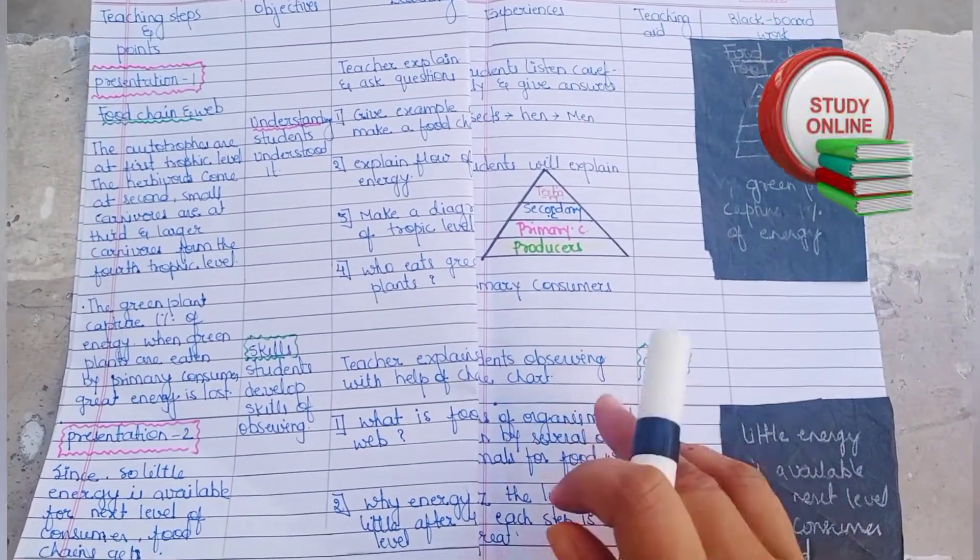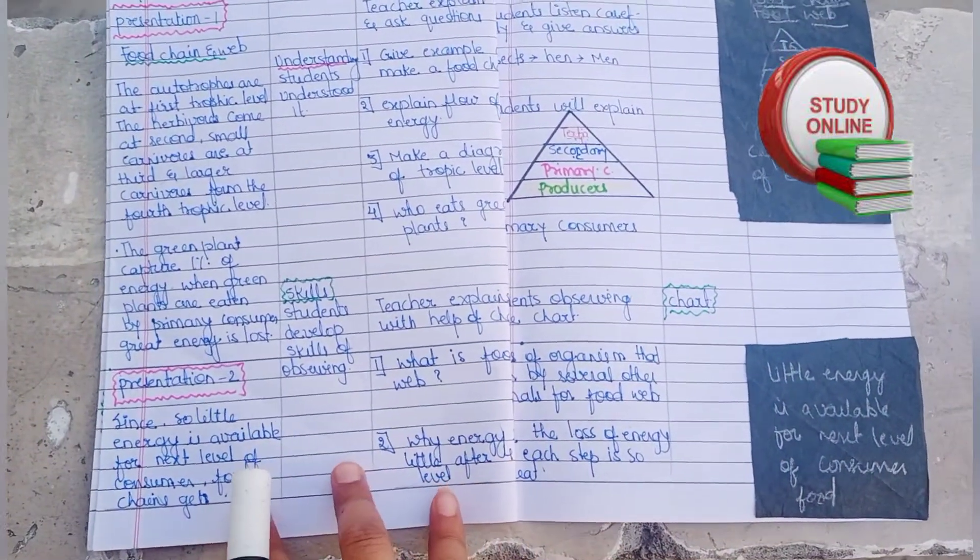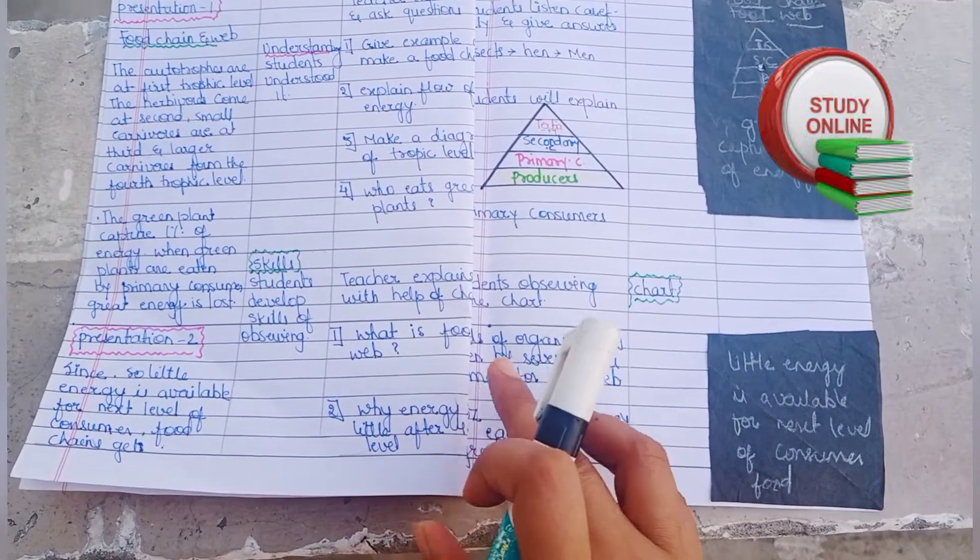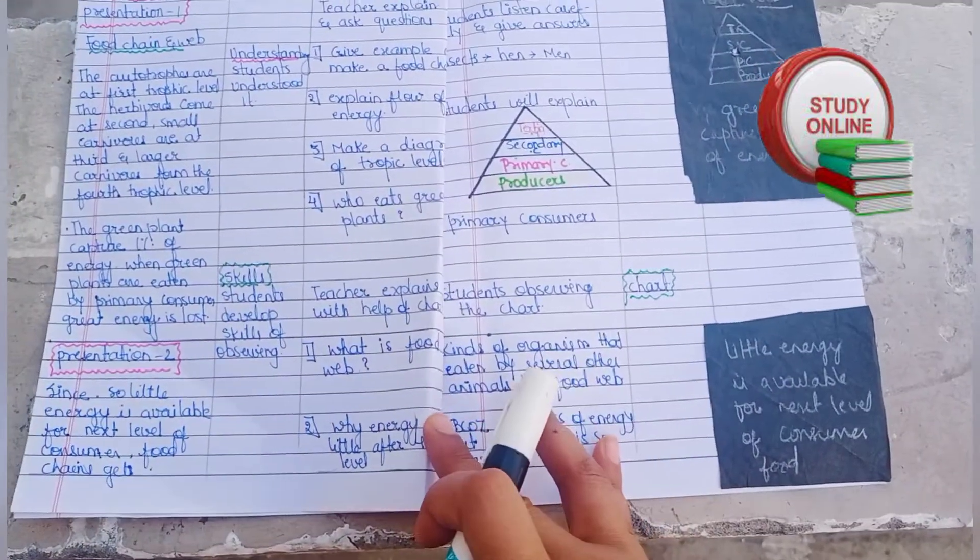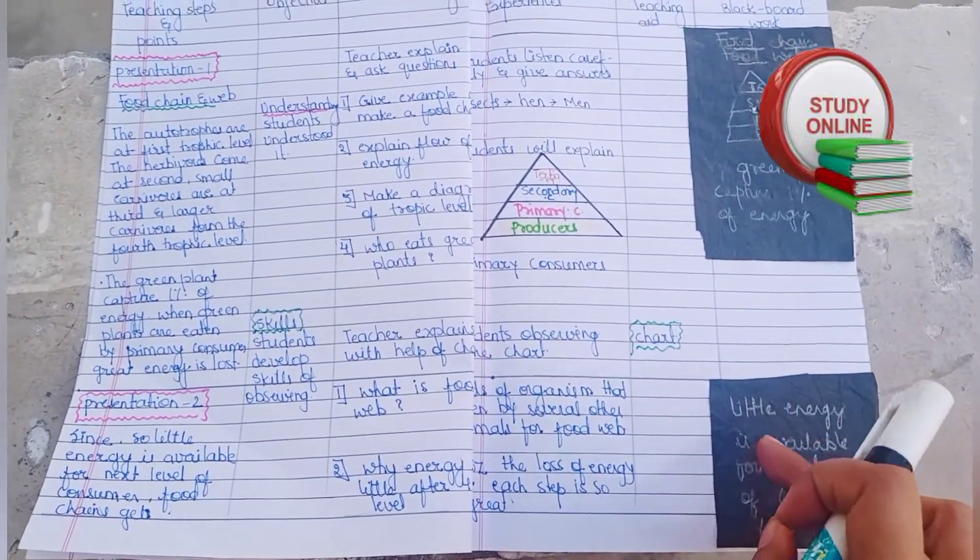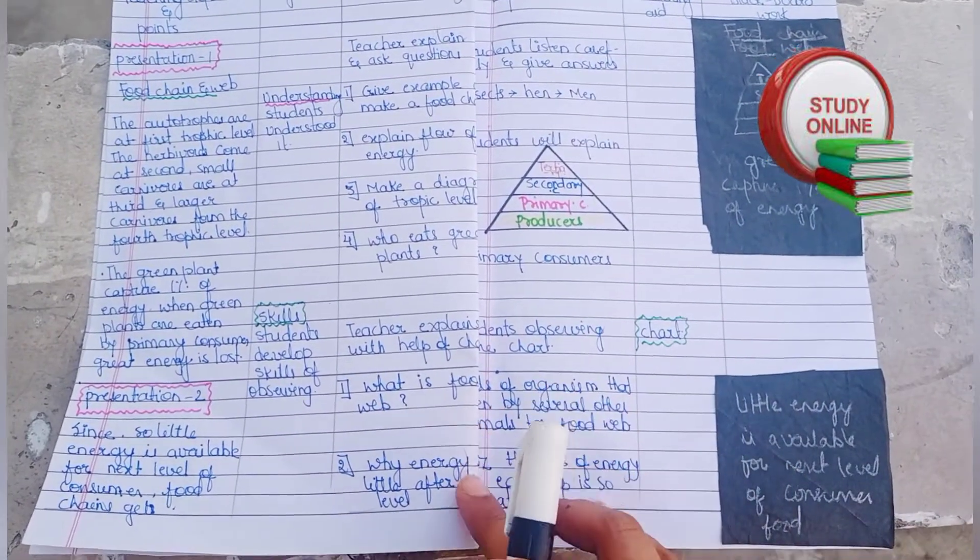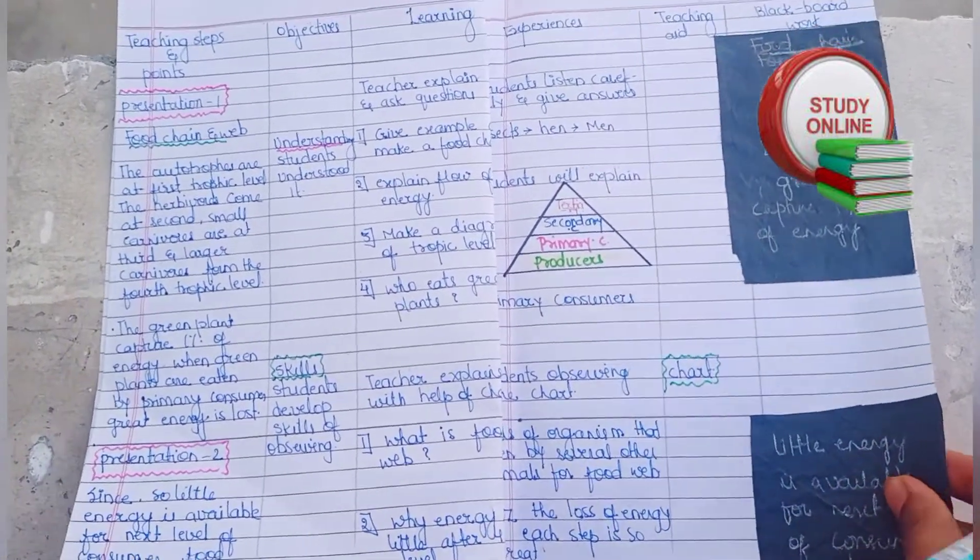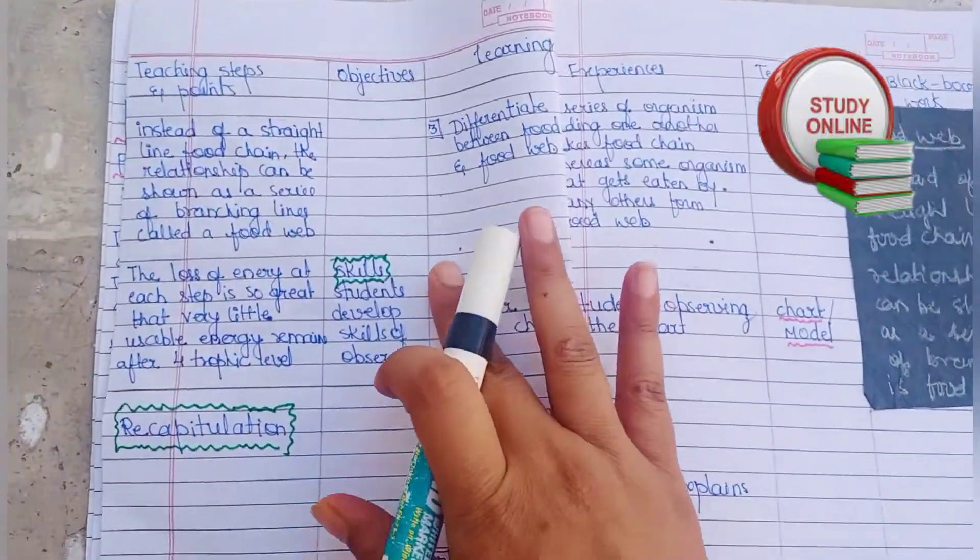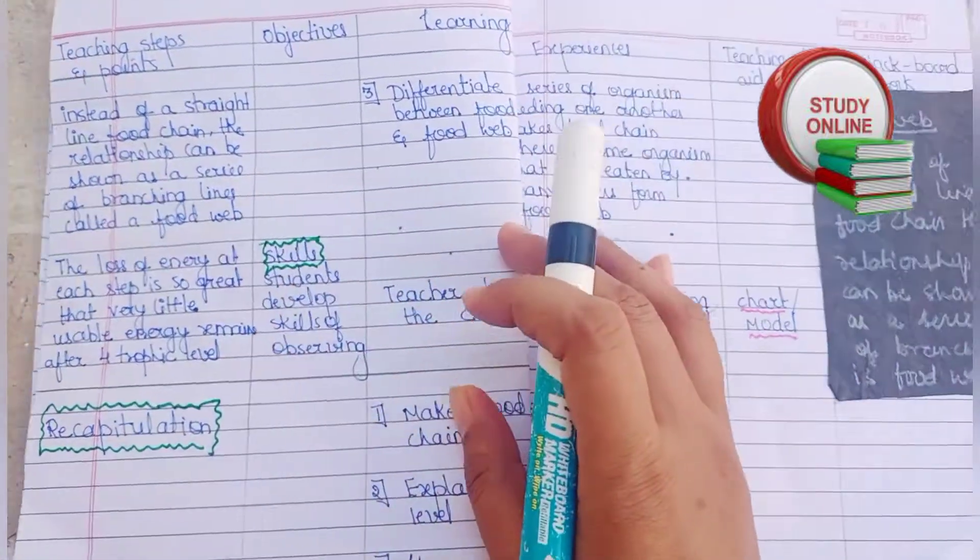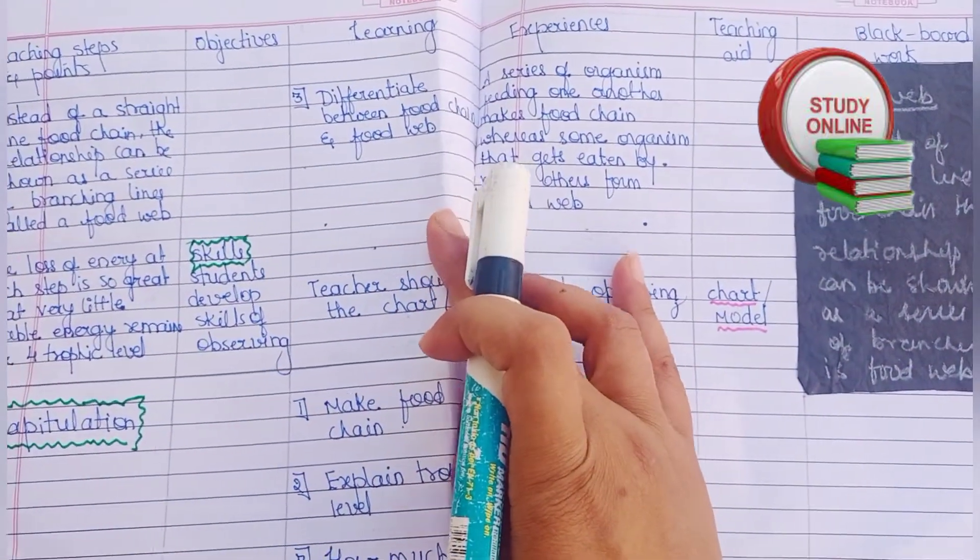Here you can see presentation two. We do the same thing for five to six minutes to explain our topic. This is the blackboard work and these are the questions we ask students after explaining properly. Here is the rest of presentation two.